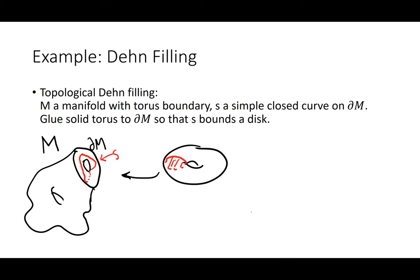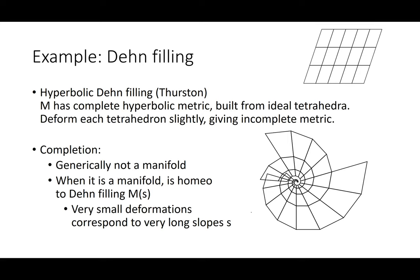An example of geometric convergence in finite-volume manifolds is Dehn filling. The topological Dehn filling takes a manifold with torus boundary and a simple closed curve S, and glues a solid torus so S bounds a disc. Thurston was the first to see you can do this geometrically: starting with a complete hyperbolic metric — for example built from ideal tetrahedra as he did explicitly for the figure-eight knot complement in his late-1970s notes — the torus boundary has a fundamental domain on horospheres, tiling the plane as a parallelogram, giving a complete structure.